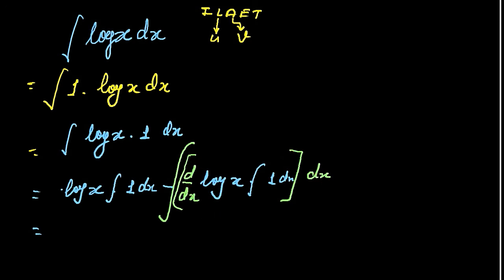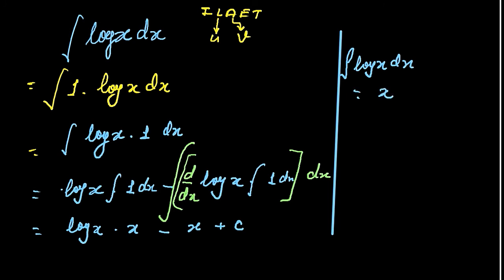So we can write log x into x minus integral of dx, which is x, plus some constant c. Finally, we will get integration of log x dx equals x log x minus x plus some constant c. So it is our final required solution.